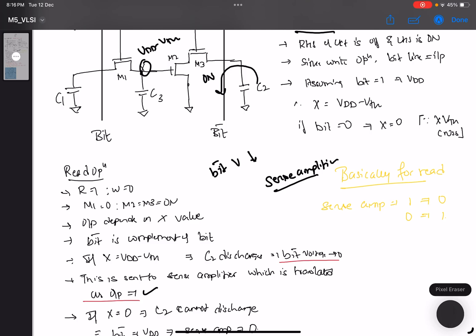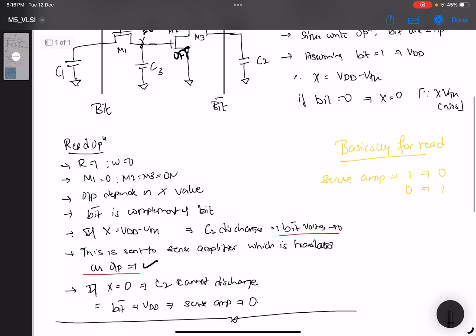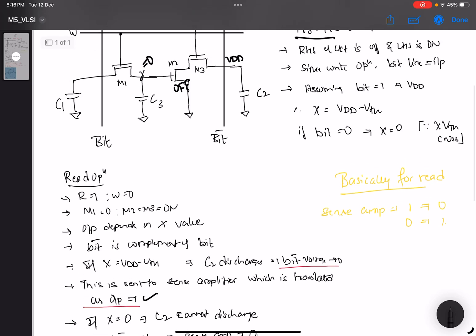Similarly, if X is equal to 0, then what happens? If X is 0, then your M2 is also off. And therefore, since bit bar is initially high, since their input line is high, bit bar is precharged. So bit bar is VDD, and therefore this is unable to discharge.